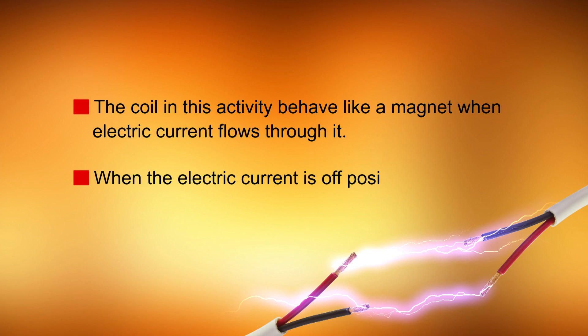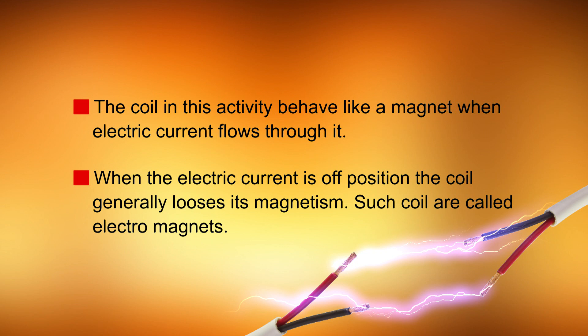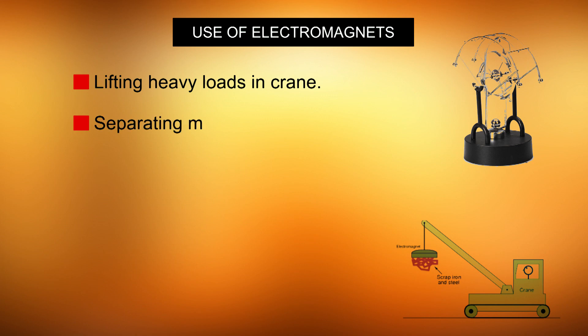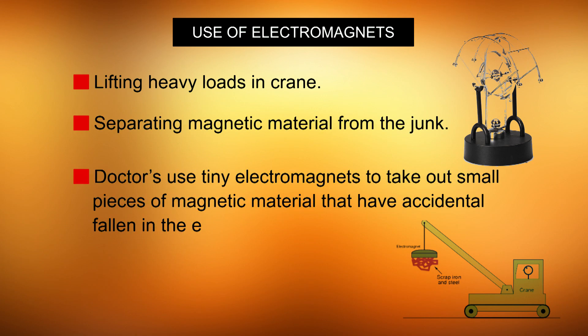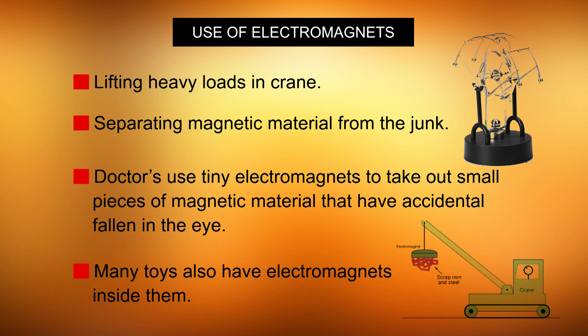The coil in this activity behaves like a magnet when electric current flows through it. When the electric current is switched off, the coil loses its magnetism. Such coils are called electromagnets. Electromagnets can be made very strong and can lift very heavy loads. The end of a crane has a strong electromagnet attached to it. Electromagnets are also used to separate magnetic materials from junk. Doctors use tiny electromagnets to remove small pieces of magnetic material that have accidentally fallen into the eye. Many toys also have electromagnets inside them.